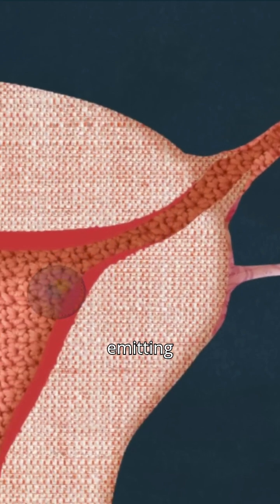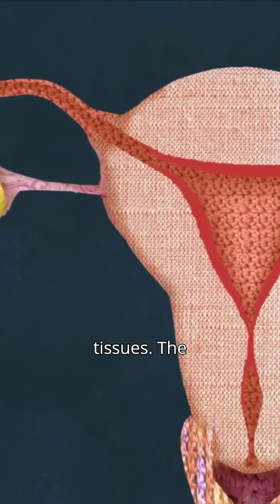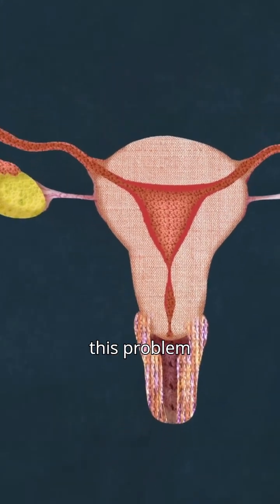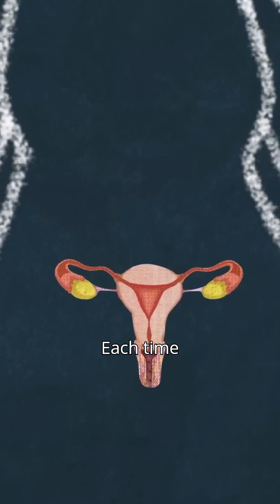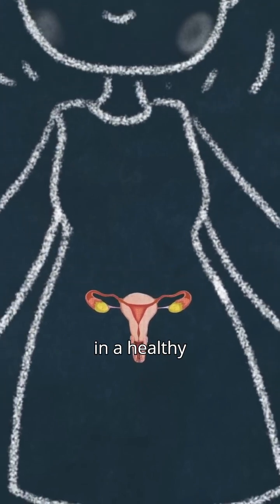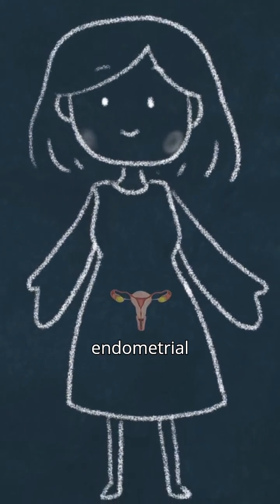And all the time, it may be emitting hormonal signals that disrupt her tissues. The body avoids this problem by simply removing every possible risk. Each time ovulation doesn't result in a healthy pregnancy, the womb gets rid of its endometrial lining.